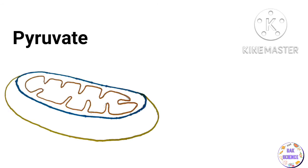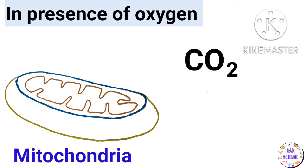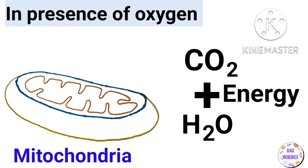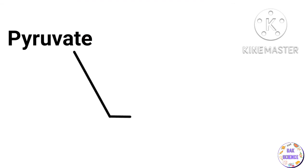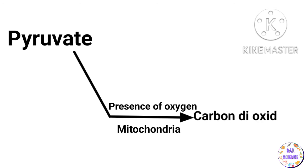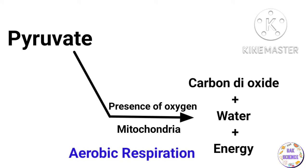Pyruvate in mitochondria, in the presence of oxygen, is converted into carbon dioxide and water. During this process, a large amount of energy is produced. This process takes place in the presence of oxygen, so it is called aerobic respiration.